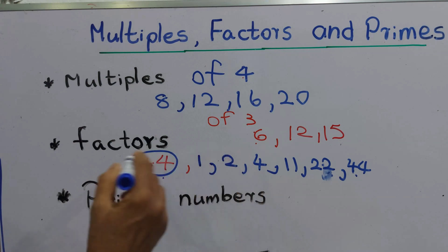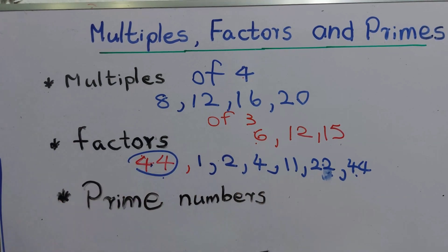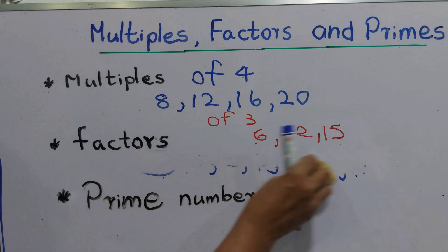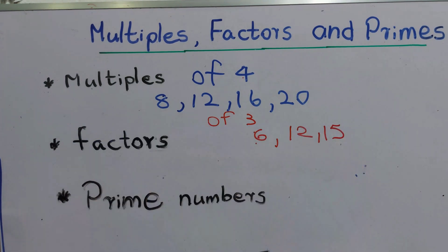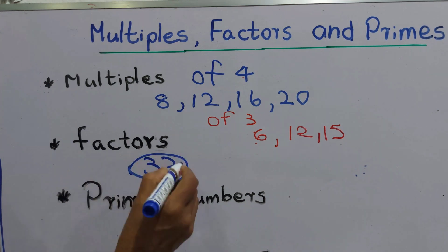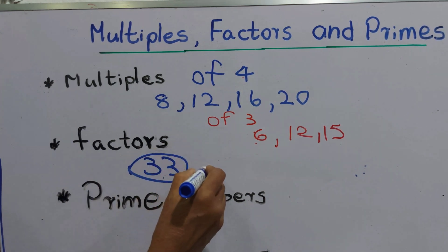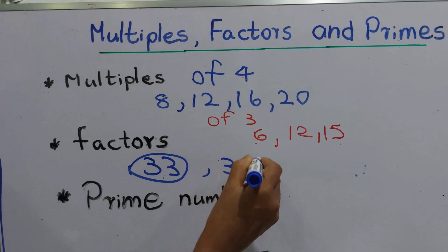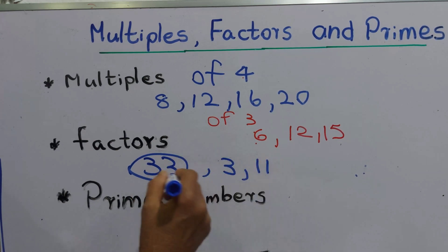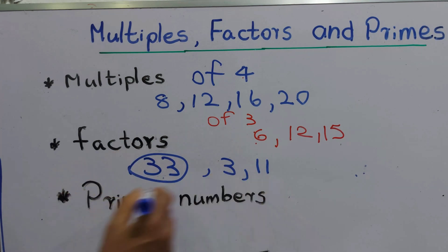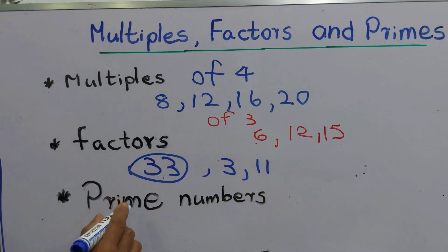We will take 33. The factors of 33 are: 3 and 11. Those are the factors of 33. When it comes to prime numbers, prime numbers are only divisible by themselves and by 1.